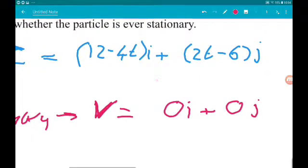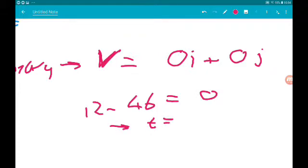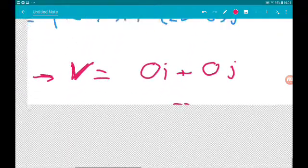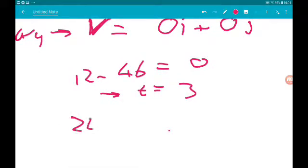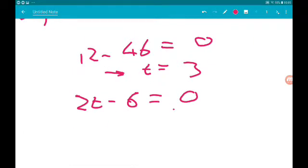So 12 minus 4t being equal to 0 gives us t equals 3. 2t minus 6 equals 0 also gives us t equals 3.